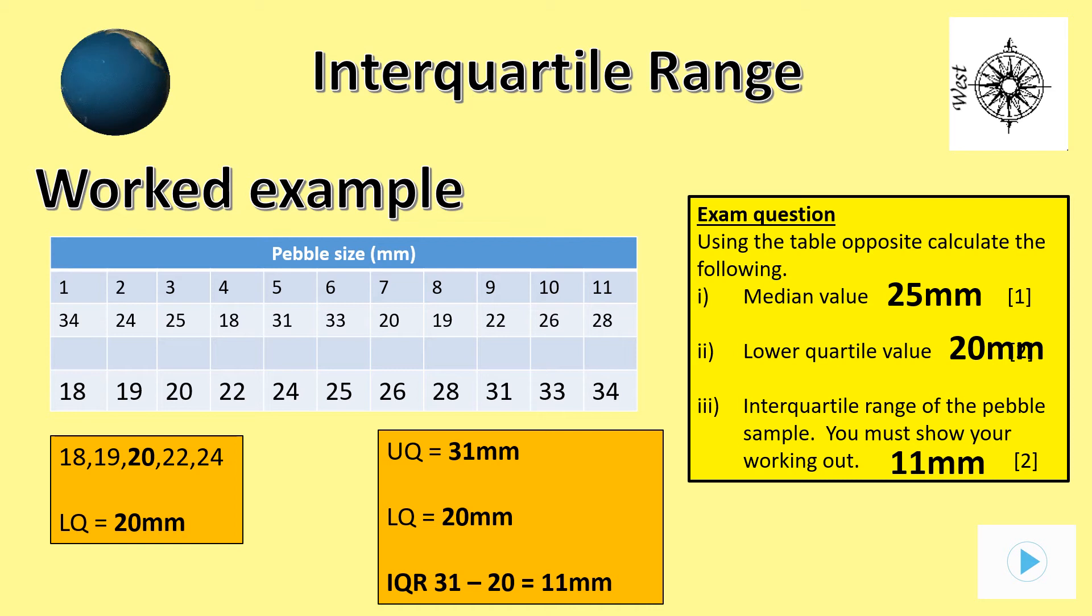To work out the interquartile range I will first need to calculate the upper quartile value for all the rank ordered stones above the 25 mm median value with numbers 26 to 34. The upper quartile value is 31 mm. To calculate the interquartile range I will calculate the difference between the upper and lower quartile values. This gives me a calculation of 31 minus 20 which equals 11 mm. Pause the show to make sure you know how to work these all out.